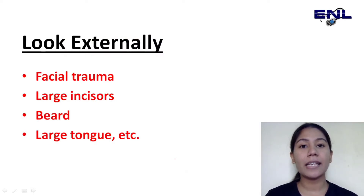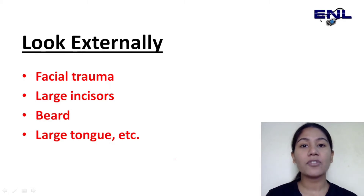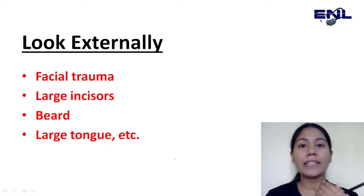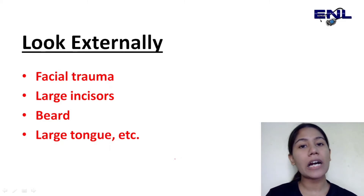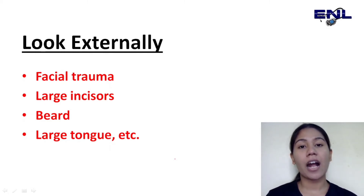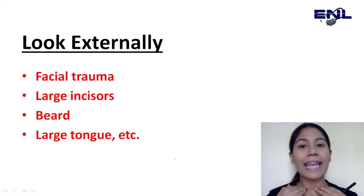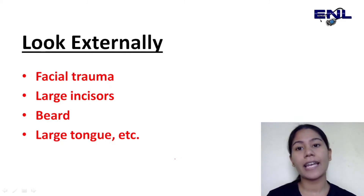Let's start with L — Look Externally. That means we are looking at the person from outside. We check: is there any facial trauma? Are the incisors too large (which could cause the patient to bite the ET tube)? Is there a heavy beard (which can also cause difficulty)? Is there a large tongue? A large tongue will obstruct the back pathway — it will cover the oropharynx area, causing difficulty in inserting the ET tube or bag-and-mask ventilation. We also check if the individual is obese, as obesity causes a larger neck mask and adds difficulty.